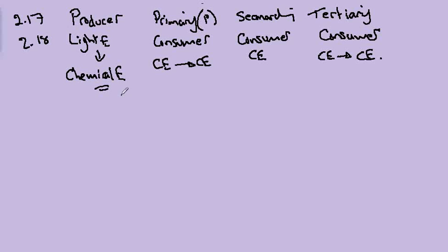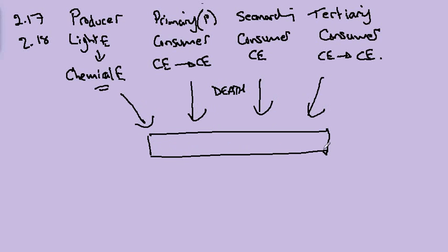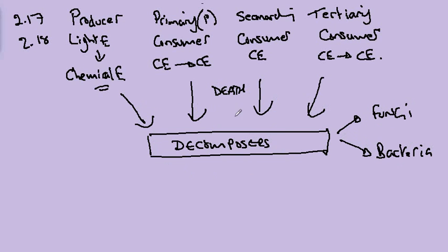Of course, all of these organisms at some stage or another die, at which point they are broken down by a special group of organisms called decomposers. Two examples of decomposers are fungi and bacteria, which are important in the recycling of molecules — often breaking down complex molecules into nitrates and phosphates.